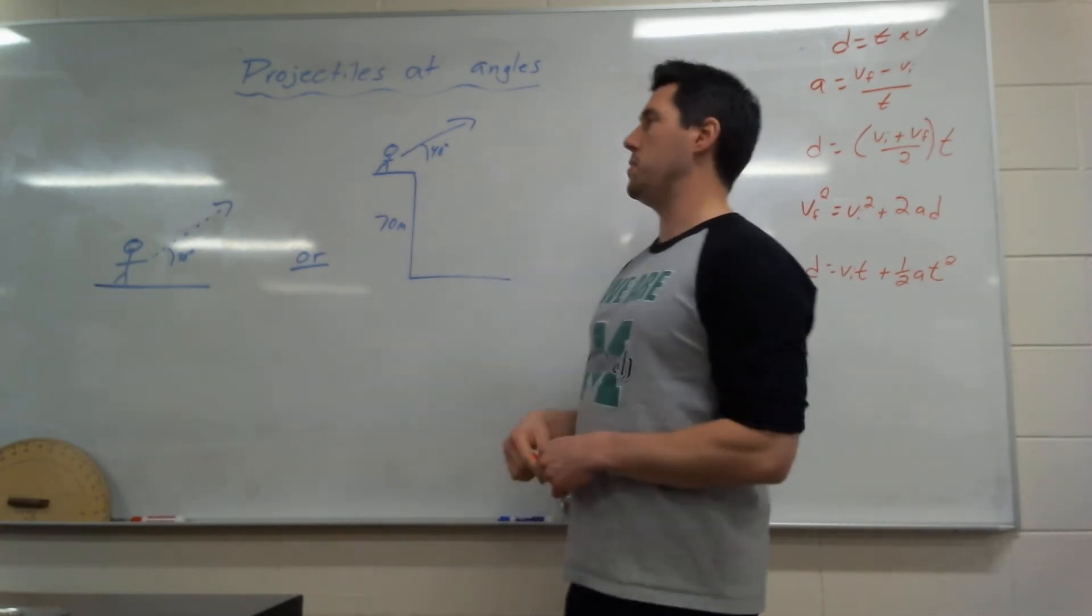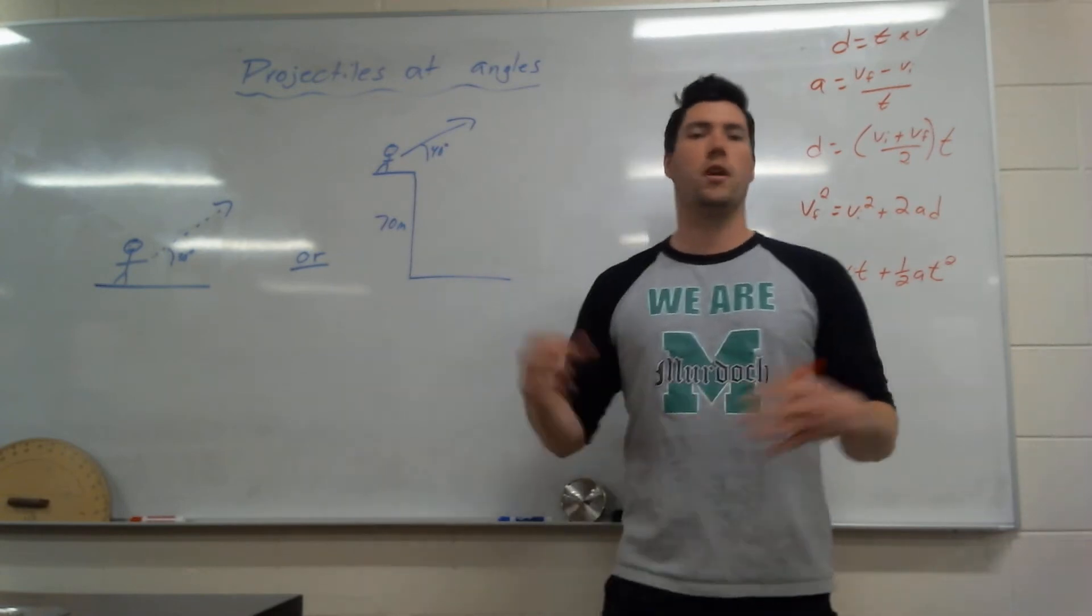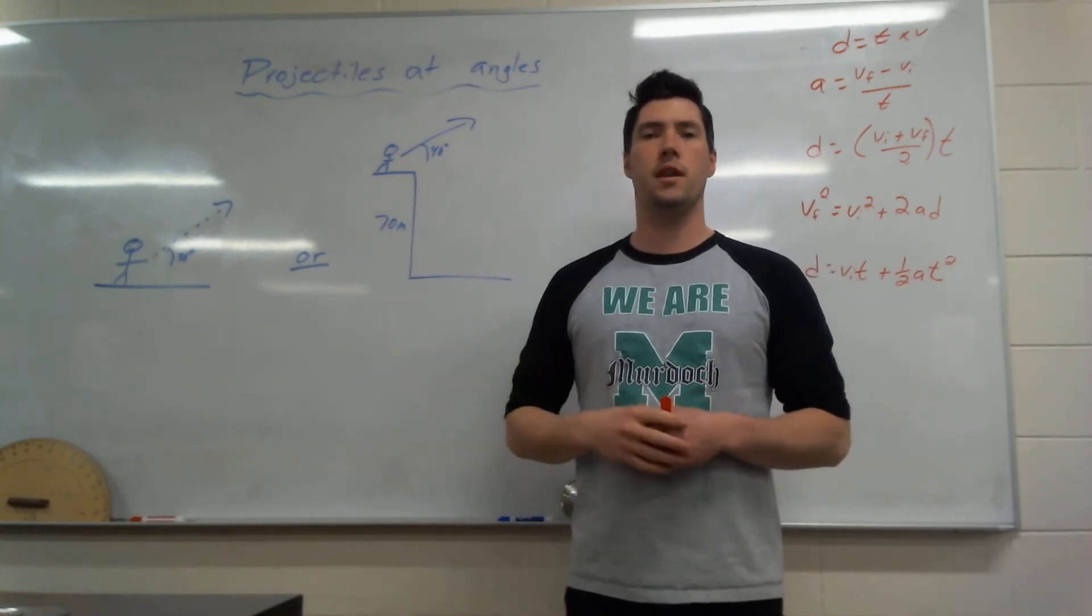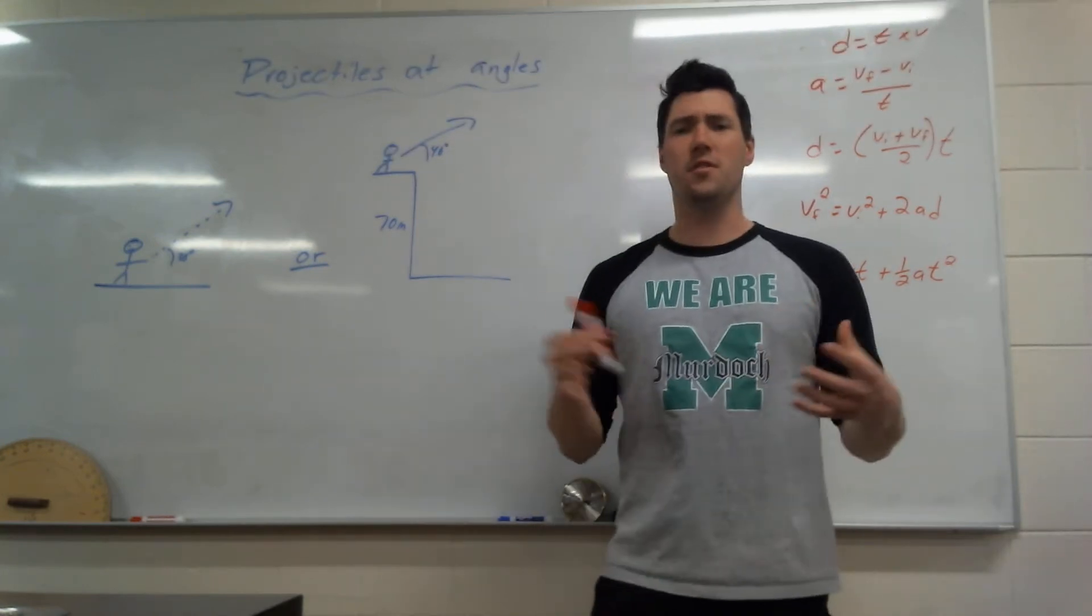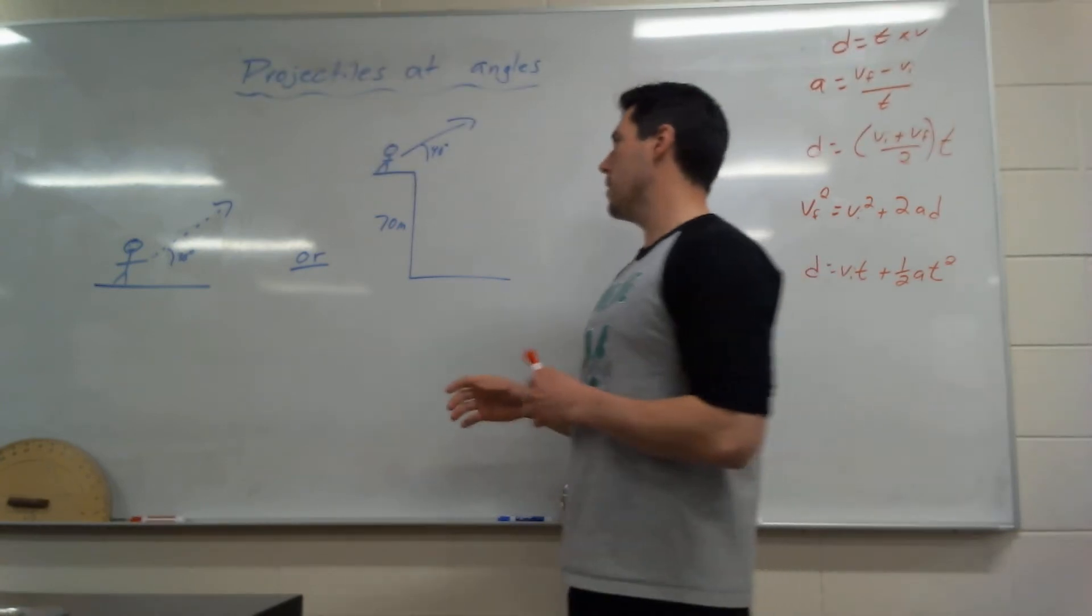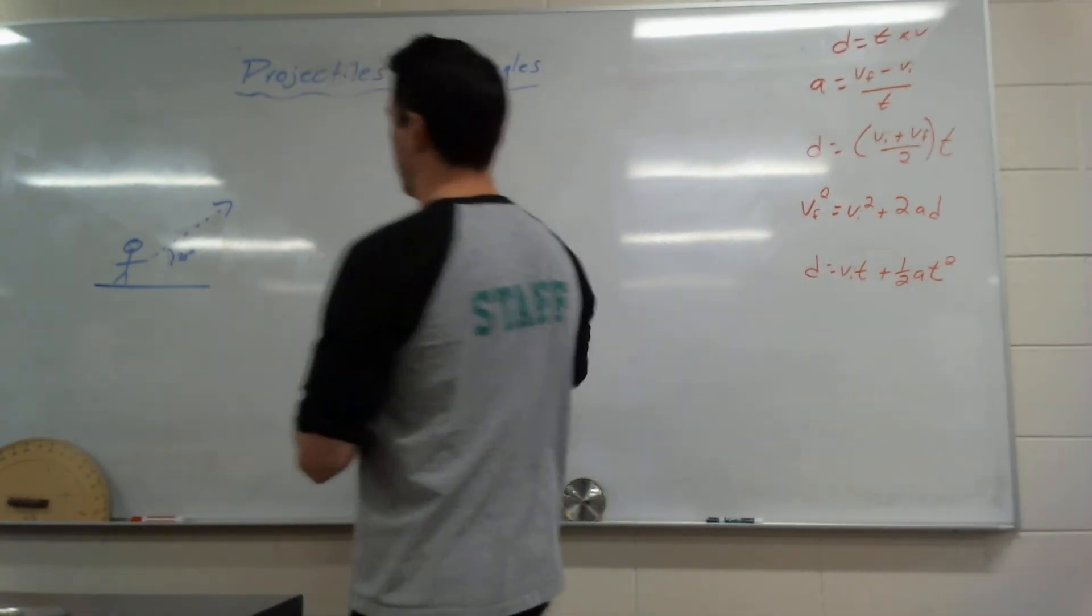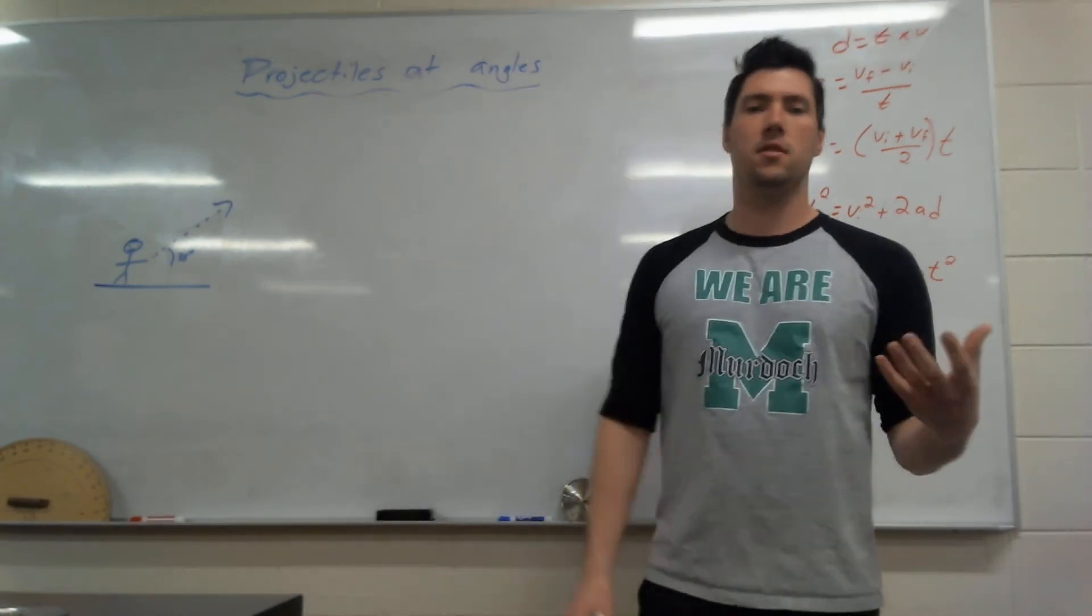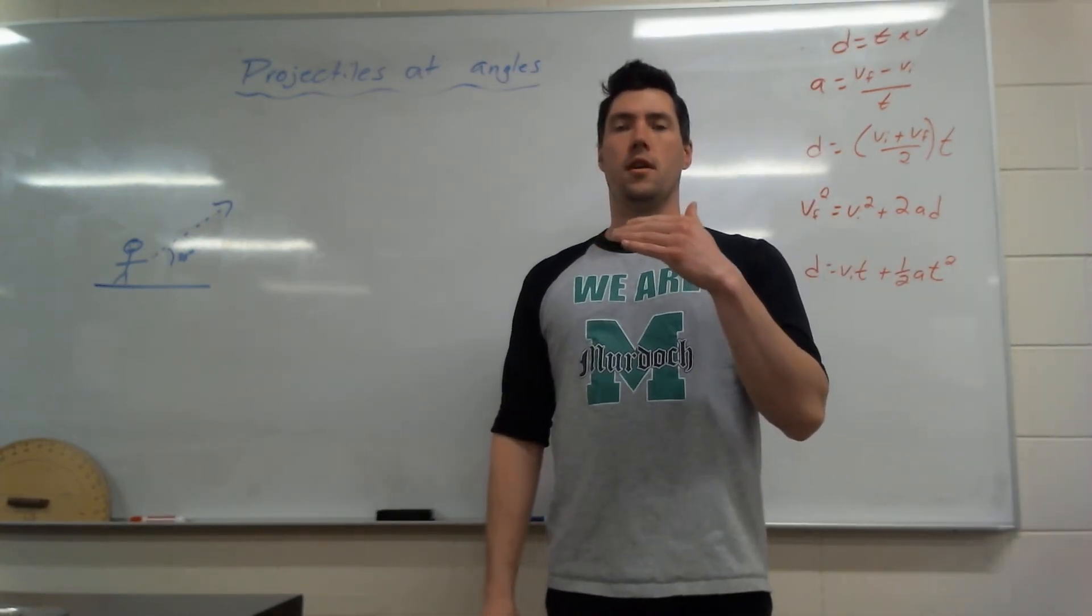For either of these, they could be like, how far did it go and land on the ground? Or it could be like, it needs to go over a castle wall, it needs to go over a tree, or I need to hit a target at this exact spot. So there's a few different questions that you can get. Let's go over one question here. I'll talk about how to make this easier, and how we make this easier is basically just make it a horizontal question.